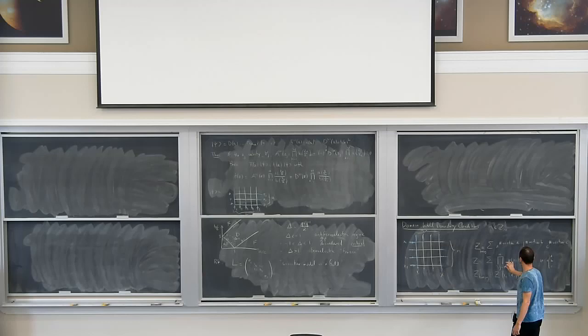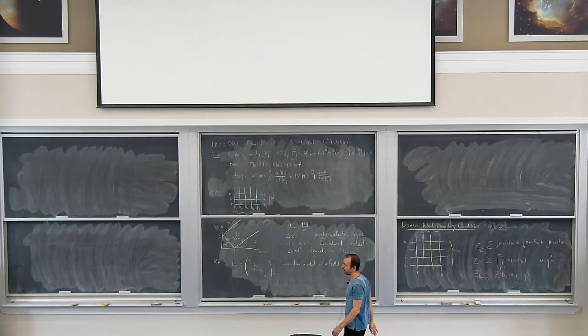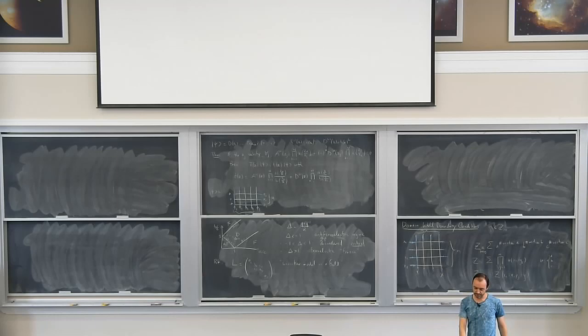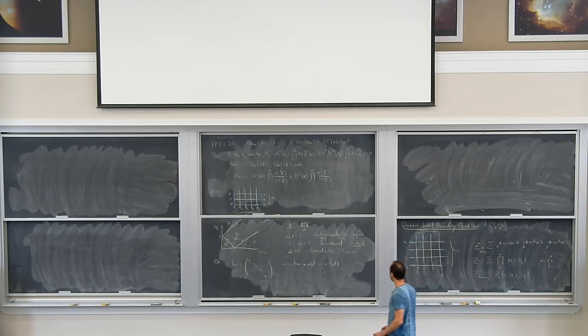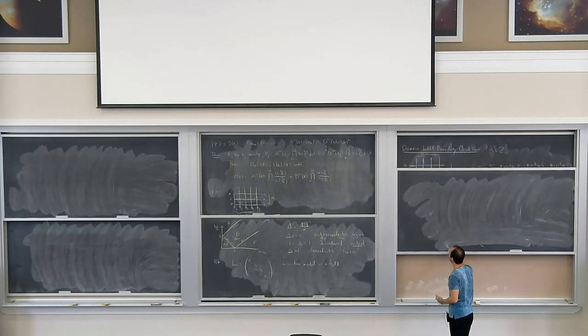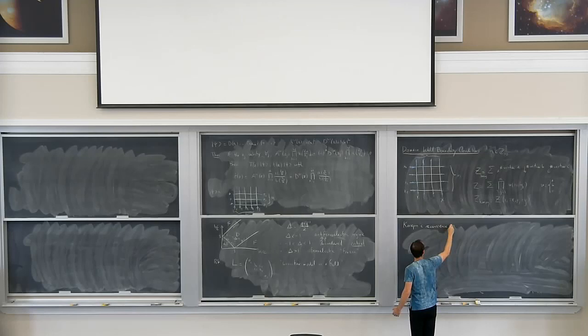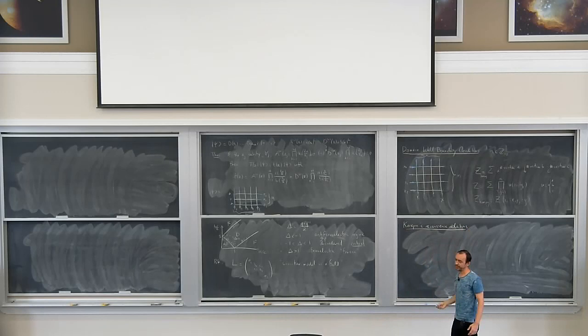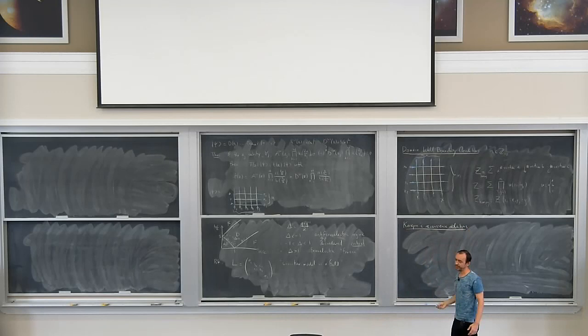Here is the beginning of the analysis that Izergin did. He said: we don't really know how to compute this partition function, but maybe we can write sufficiently many conditions to uniquely determine it. He noticed that Z_N is actually uniquely determined by a series of recurrence relations. Perhaps I should write Z sub N to keep track of the size of the system.